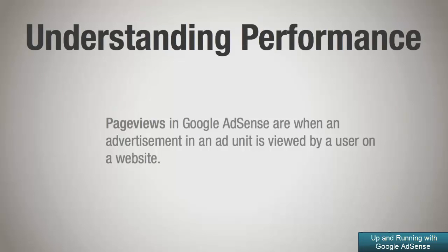The first one is page views. Page views in Google AdSense are when an advertisement in a Google AdSense ad unit is viewed by a user on a website. The more page views you have, the more money you're going to make.